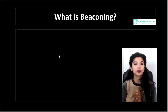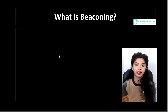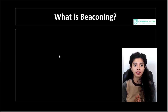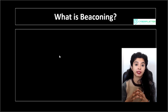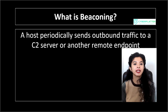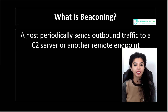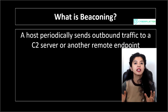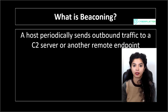What is beaconing? This is a question we are building up for the next one. Beaconing is when a host periodically sends outbound traffic to a C2 — that is, a command and control server — or another remote endpoint. Think of it like the host is checking in on a schedule. This can be malicious or benign.